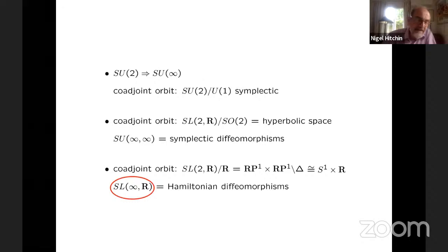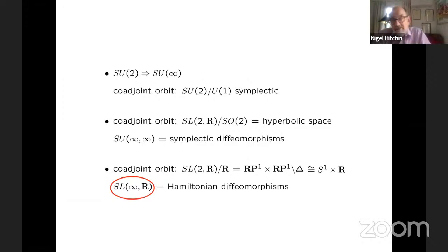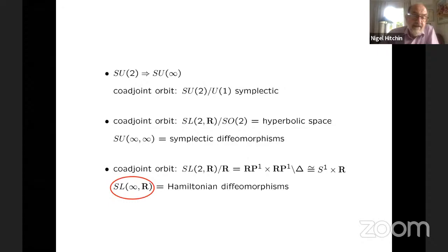So if you ask, well, how do we go from SU(2) to SU infinity? Why do we look at the two-sphere? One way of saying it is that you're looking at a co-adjoint orbit, SU(2) over U(1), which is a symplectic homogeneous space of SU(2), its symplectic surface. So now let's look at the non-compact group, SL(2,ℝ). Then there are two generic co-adjoint orbits. One of them is hyperbolic space itself — we divide out by SO(2).